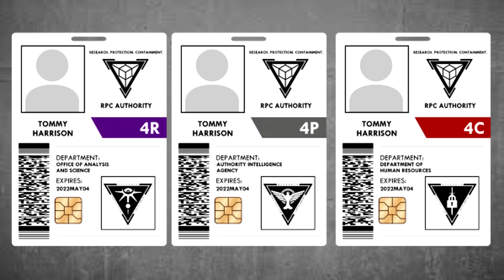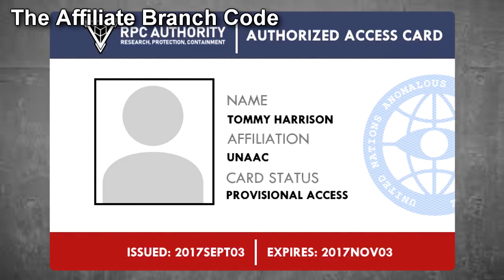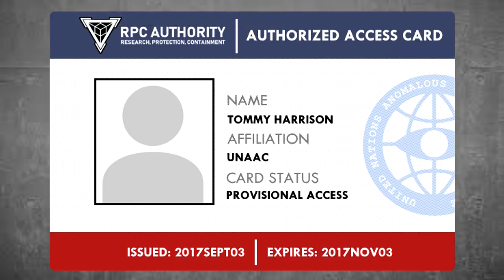Each branch code indicates which division of the authority that personnel is assigned to: R for Research, P for Protection, and C for Containment. Additionally, A for Affiliate designates members of an allied or affiliated group or government of interest who require limited temporary clearance for the purpose of liaison or informational exchange work. Affiliate personnel are regarded as outside of the divisional structure of the authority, even if they are jointly assigned to work on a particular division project or operation, and therefore receive their own specialized branch code.